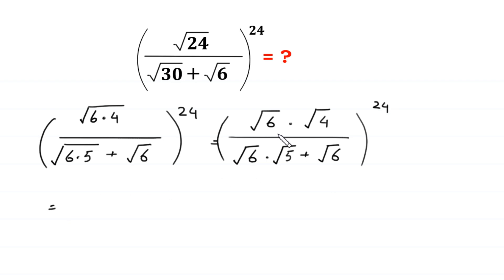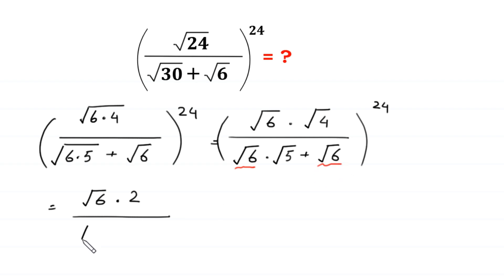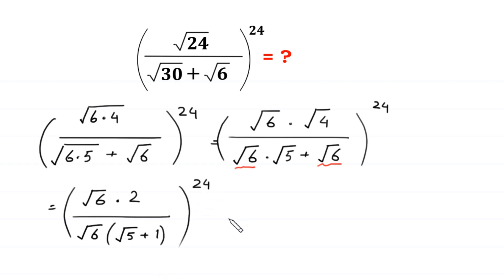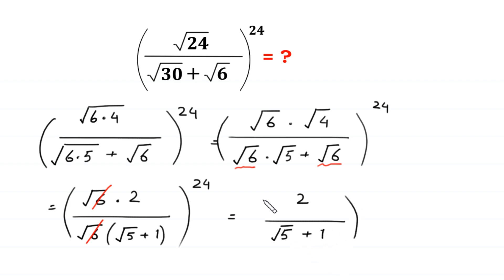Next, square root of 6 remains the same; square root of 4 is 2. In the denominator, we factor out square root of 6 as a common factor, leaving square root of 5 plus 1 in the bracket, whole to the power 24. This square root of 6 cancels with the square root of 6 in the numerator, leaving 2 divided by square root of 5 plus 1, whole to the power 24.